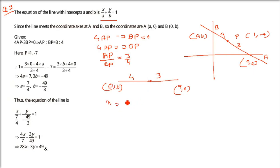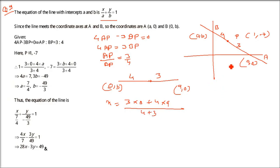Now we have to find x using the section formula: (m·x₂ + n·x₁) / (m + n). So it is (3×0 + 4×a) / (4 + 3). This gives the x-coordinate of point P. Coming to y, we use (m·y₂ + n·y₁) / (m + n).